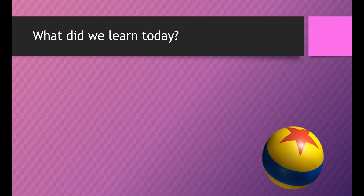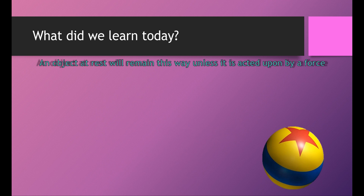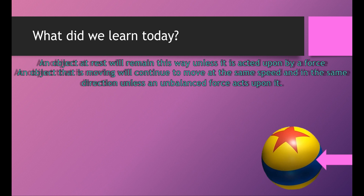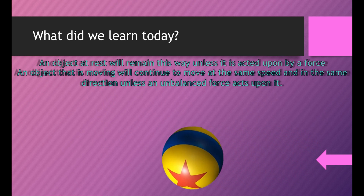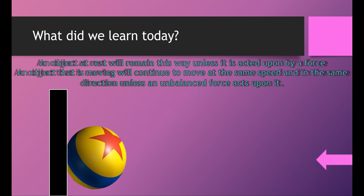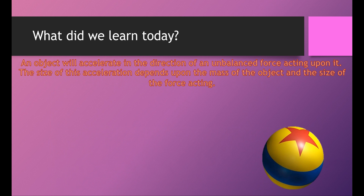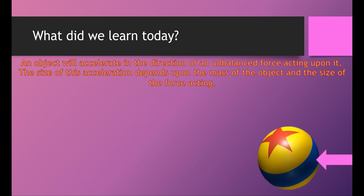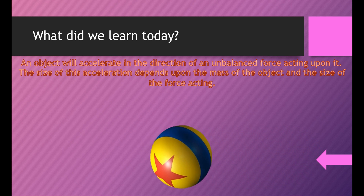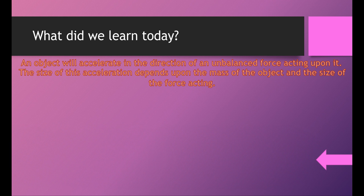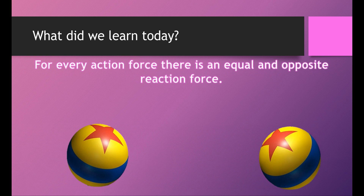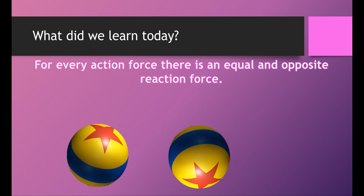So what did we learn today? An object at rest will remain this way unless it is acted upon by a force. An object that is moving will continue to move at the same speed and in the same direction unless an unbalanced force acts upon it. An object will accelerate in the direction of an unbalanced force acting upon it. The size of this acceleration depends upon the mass of the object and the size of the force acting. For every action force there is an equal and opposite reaction force.